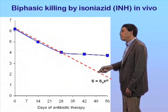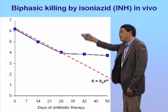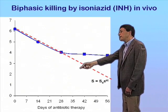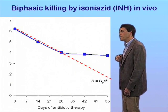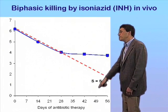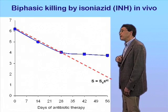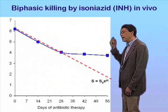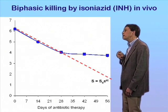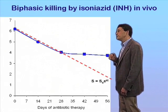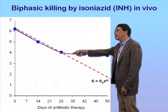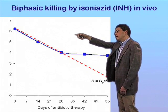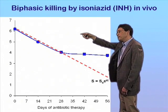What you can see, looking on the y-axis at the number of viable bacteria still within the lungs — that's a log scale — versus the days on chemotherapy, is that killing of bacteria by isoniazid, or INH, is not a log-linear process. Initially, there's a period of rapid cell killing, rapid being a relative term here.